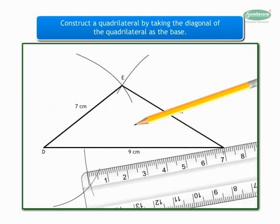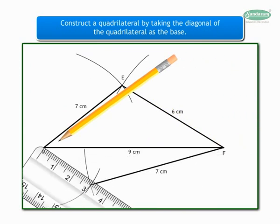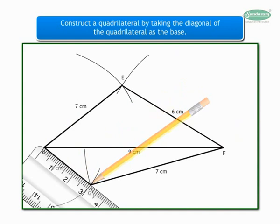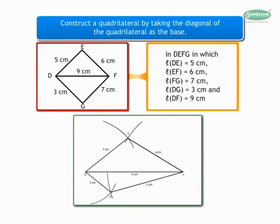Now join the point of intersection of the two arcs to point F and point D, and name it as point G. Construction of the quadrilateral is complete. We shall now mention the measures of the sides and diagonals in our accurate figure. Now we shall learn to construct a rhombus when the measure of its...